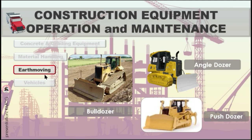Another example of earth-moving equipment: we have the bulldozer, the angle dozer, and the push dozer. A bulldozer is a crawler or continuous tractor equipped with a substantial metal plate known as the blade, used to push large quantities of soil, sand, rubble, or other such material during construction or conversion work. It is typically equipped at the rear with a claw-like device known as a ripper, used to loosen densely compacted materials.